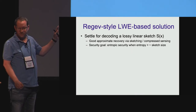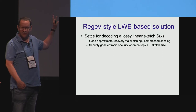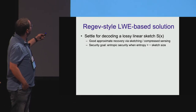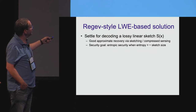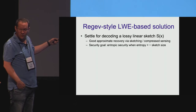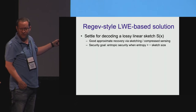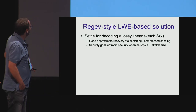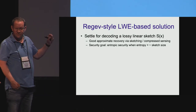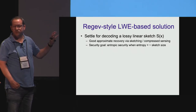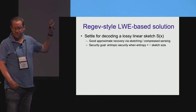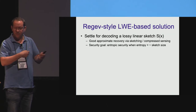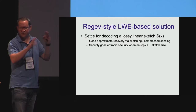Our solution crucially relies on lossiness—on getting an approximate version of the output—and it's really a simple version of the regular cryptosystem. We settle for good approximate recovery via linear sketching. Instead of learning the entire x, we learn a small number of linear combinations over the integers of the bits of x, and this is enough for good resolution of the picture using norm-sketching techniques. The security goal is entropic security where the entropy bound is roughly the size of the output of the sketch. The more sketchy the sketch, the shorter it is, the better security we get—but the picture becomes more blurry. It's a trade-off between sharpness of the picture and the level of security.